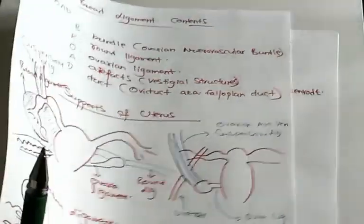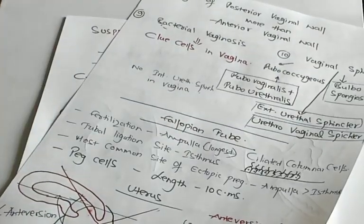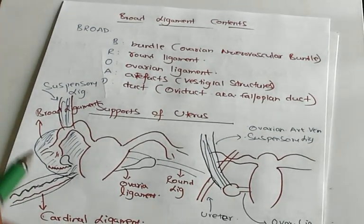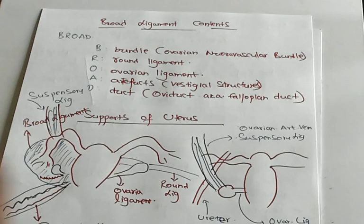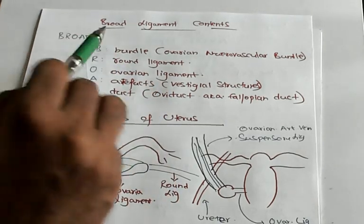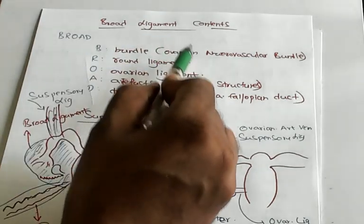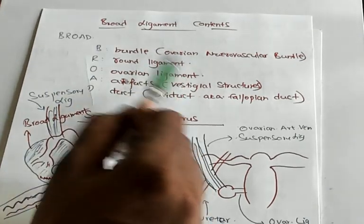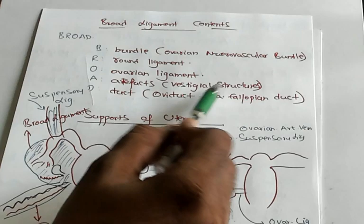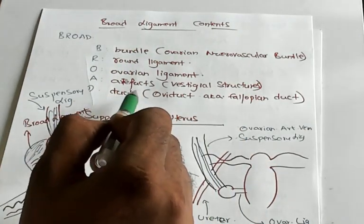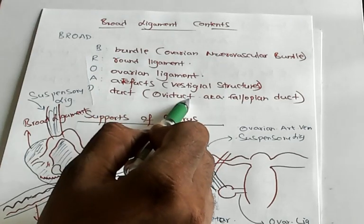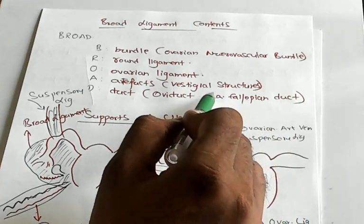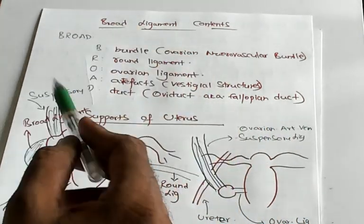Let us pick up point number 10. Broad ligaments. What are the contents of broad ligaments? You should be very sure. Mnemonic is BROAT. B is bundle, ovarian neurovascular bundle. R is round ligament. O is ovarian ligament. A is the artifacts, all those vestigial structures. And T is duct. Duct is also called oviduct, another name of fallopian duct. But it is also the content of the broad ligament.